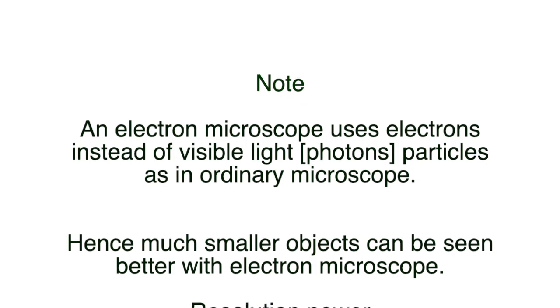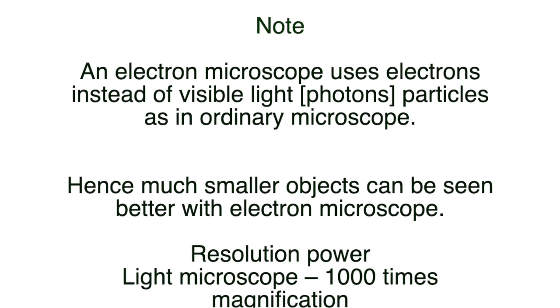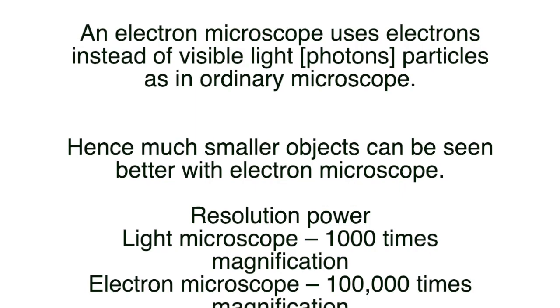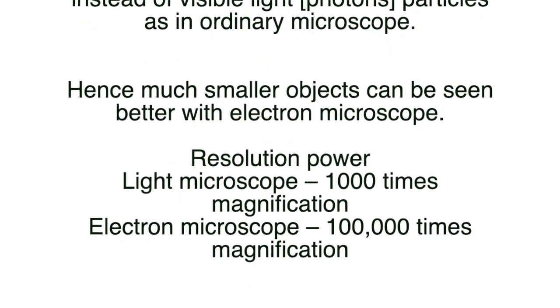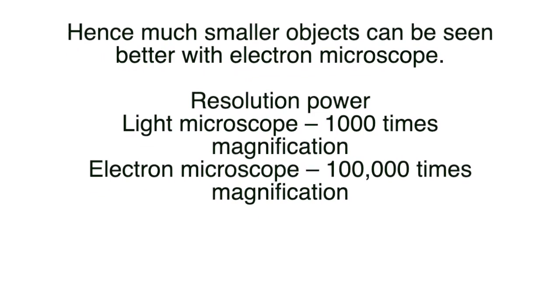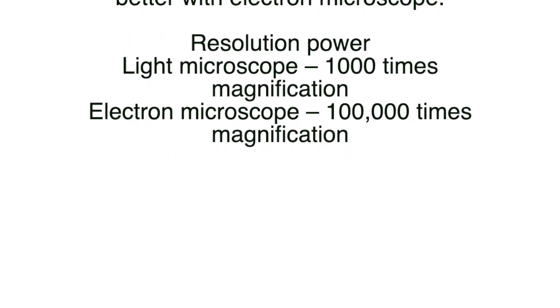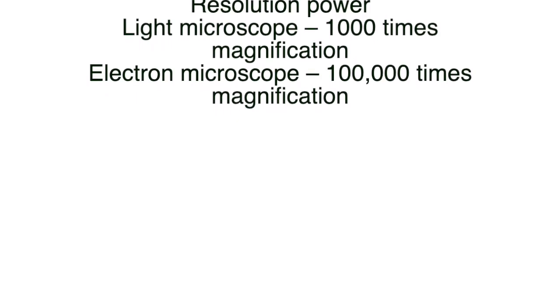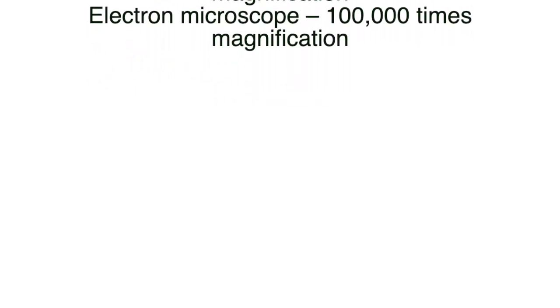Note: an electron microscope uses electrons instead of visible light — photon particles as in an ordinary microscope — so much smaller objects can be seen. The resolution power of a light microscope provides about 1,000 times magnification, while an electron microscope provides about 100,000 times magnification.